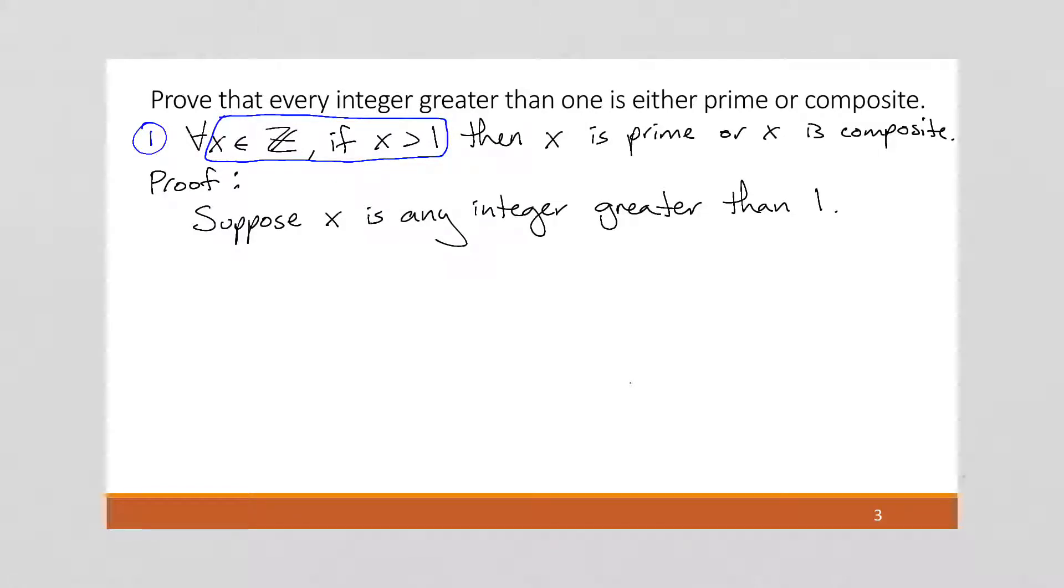Now that's step 2. Now we need to figure out our goal. Our goal is to show that X is prime or composite. That's our goal. So that's what I'm going to put here. We want to show that X is prime or composite.